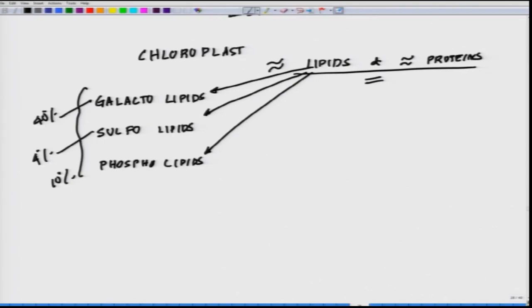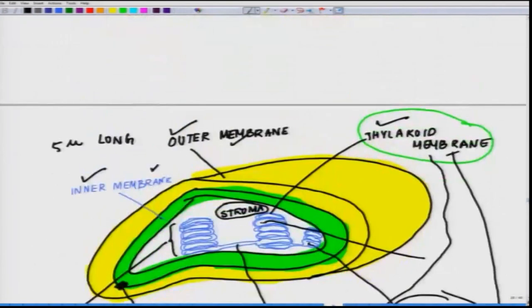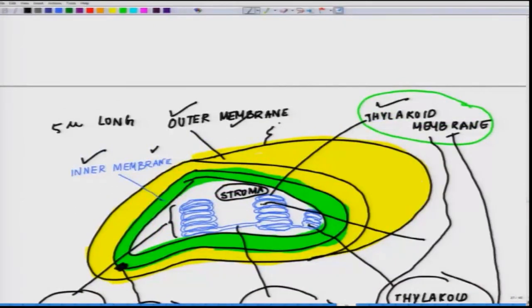Talking about thylakoid membrane again, it consists of equal amounts of lipids and proteins. The thylakoid membrane, like the inner mitochondrial membrane, is impermeable to most molecules and ions. The outer membrane of the chloroplast, like that of mitochondria, is highly permeable to small molecules and ions. The stroma contains soluble enzymes, when we talk about soluble we are talking about water soluble enzymes.